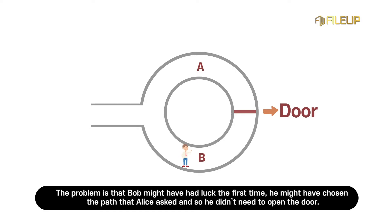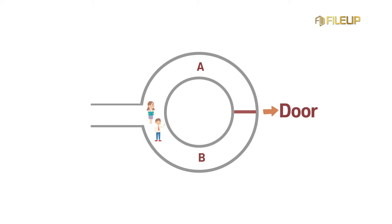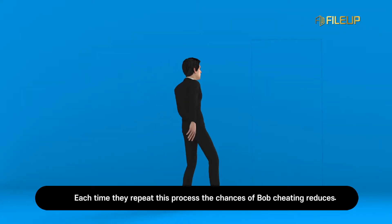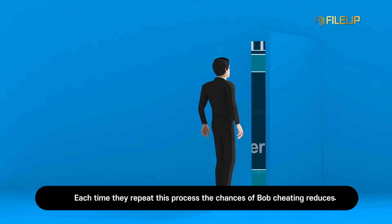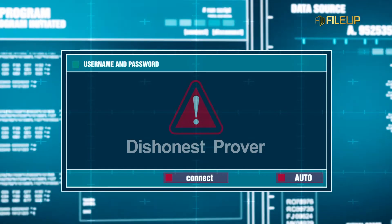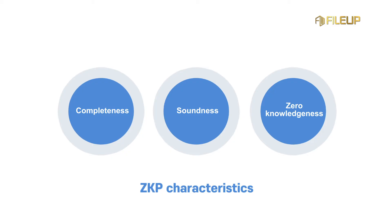The problem is that Bob might have had luck the first time — he might have chosen the path that Alice asked, so he didn't need to open the door. In order to reduce the chance of Alice being fooled by Bob, they repeat the procedure several times. Each time they repeat this process, the chances of Bob cheating are reduced.